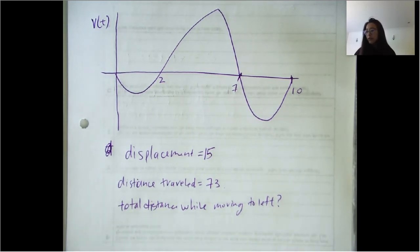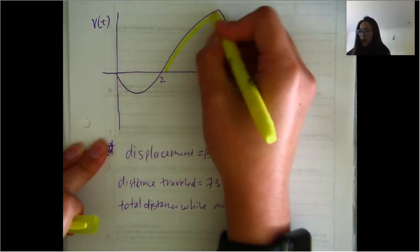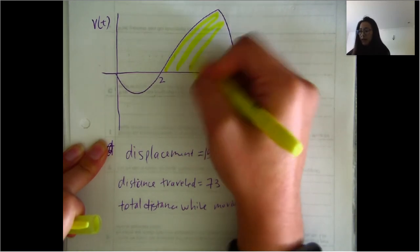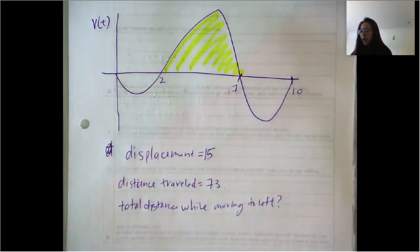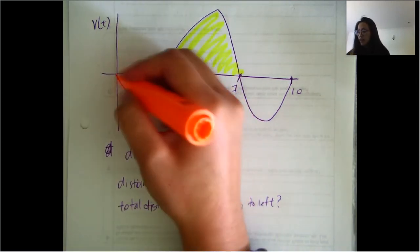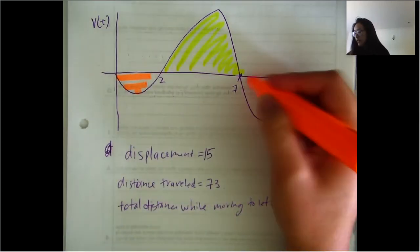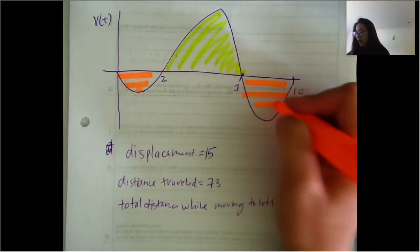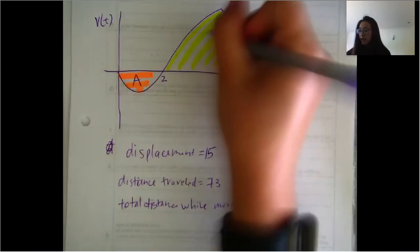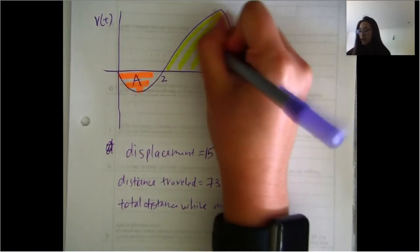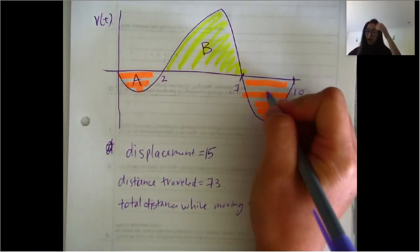As you all know, the total distance traveled would be all of the areas bounded by the curve and the x-axis added up. So that area plus this area plus this area should add up to 73.